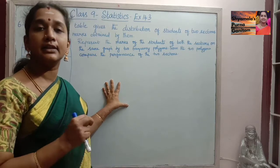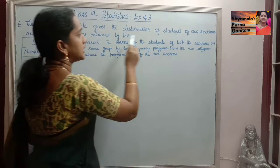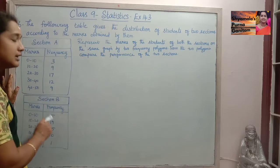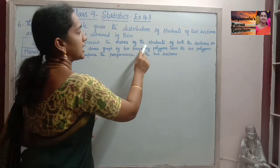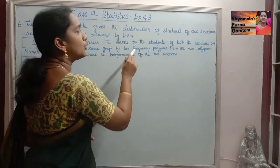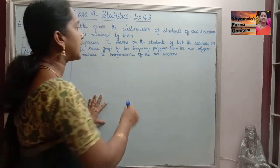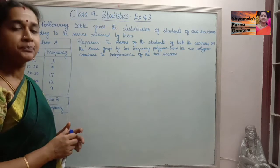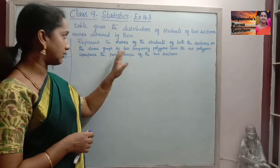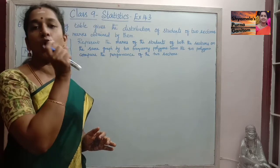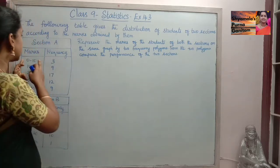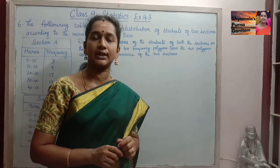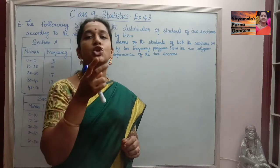We will learn how to plot given data in a frequency polygon. The following table gives the distribution of students of two sections according to the marks obtained by them. Section A and Section B marks and frequency are given. We need to represent the marks on the same graph using two frequency polygons. For plotting the frequency polygon, we need the midpoint of the data — that is, the class mark, which is the average of the upper limit and the lower limit.